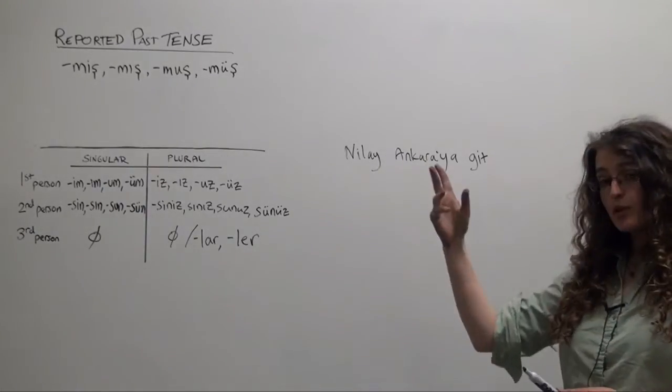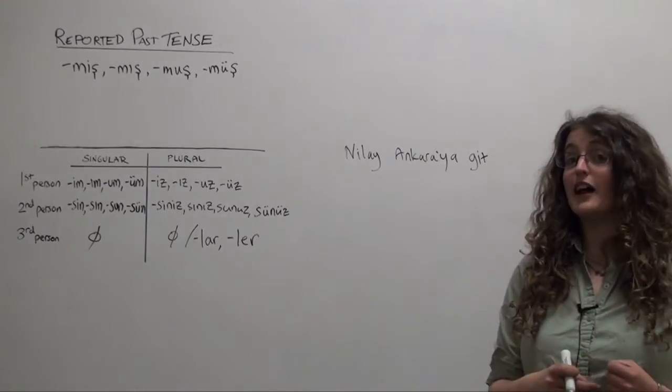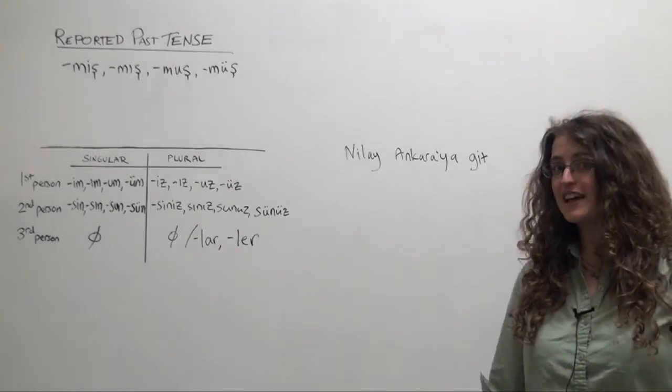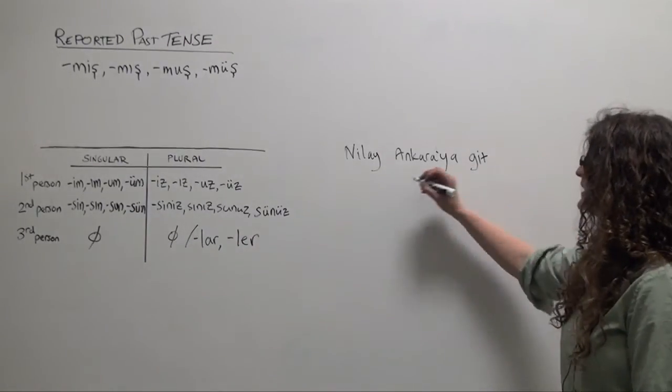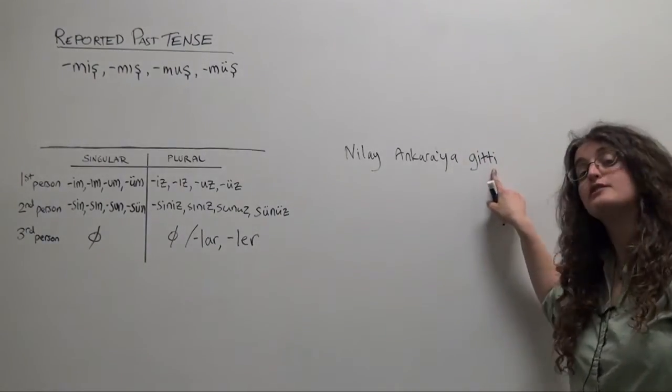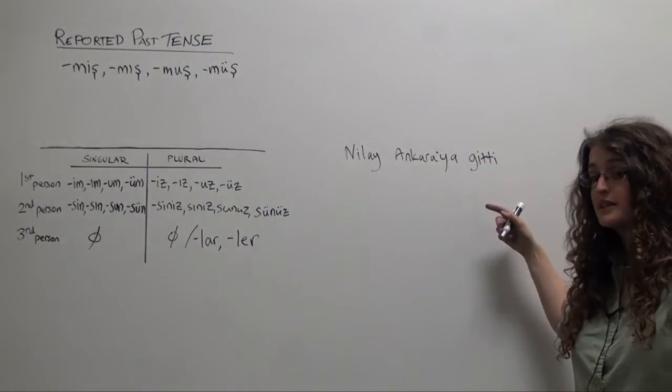Will we use the reported past tense or not? If you were with Nilay when she went to Ankara, you sat next to her on the bus, you know she went, you can say Nilay Ankara'ya gitti using the definite past tense. You know she went to Ankara, you were there too.